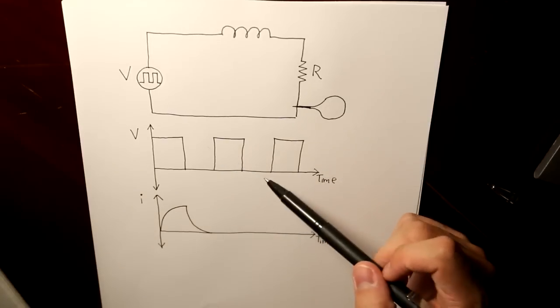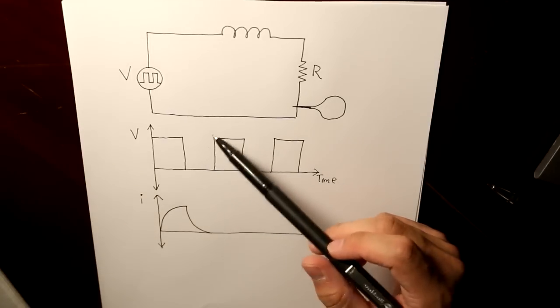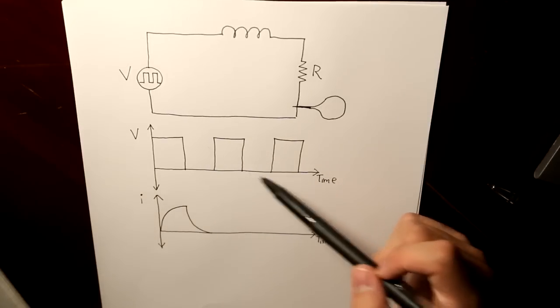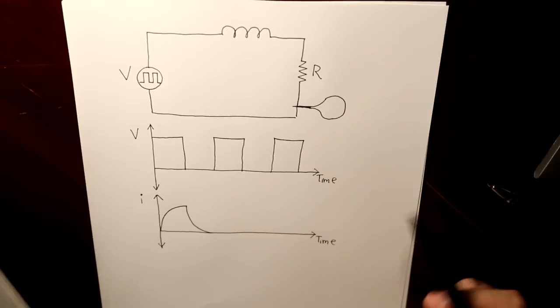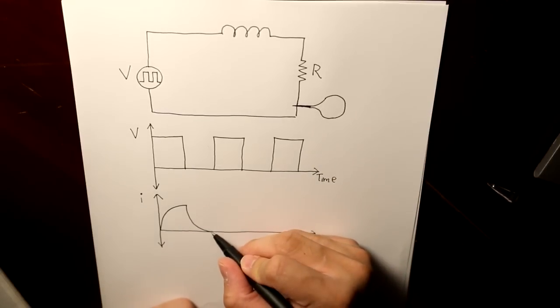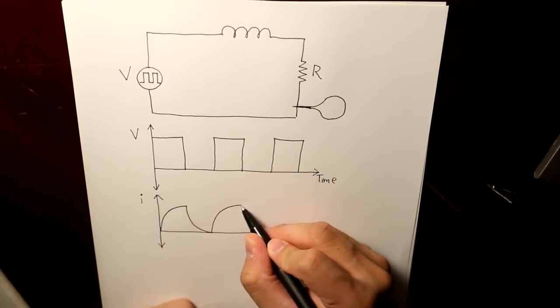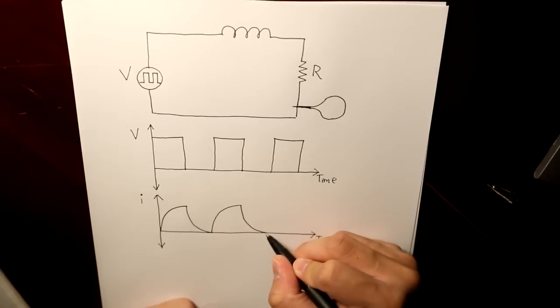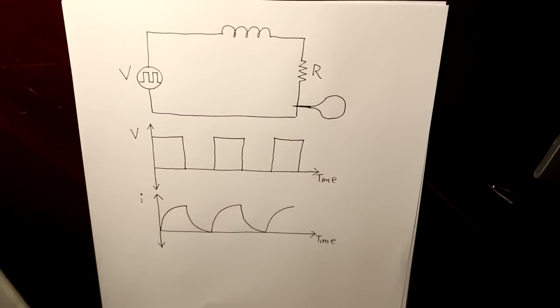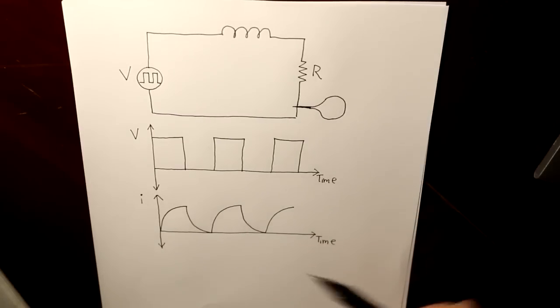And then the voltage repeats. It goes through its second cycle and then its third cycle. And then the current is going to behave very much the same. And this is how the current is going to behave.